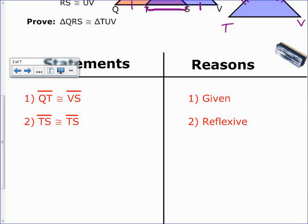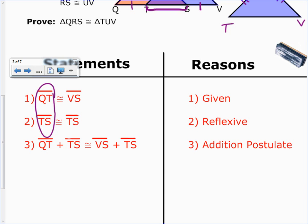Now what we do is we add them together. QT plus TS is congruent to VS plus TS, and that's our addition postulate. Notice we're adding QT plus TS and VS plus TS. We're adding the same thing to both sides. We're adding TS to both sides.